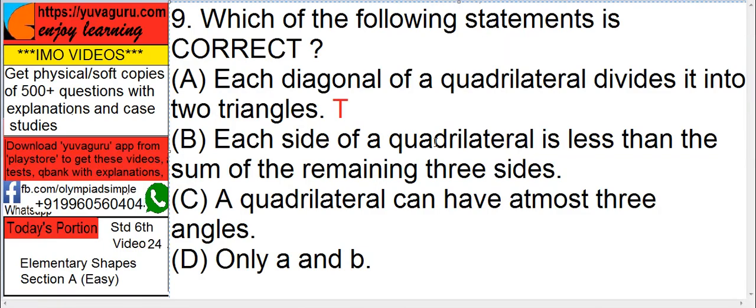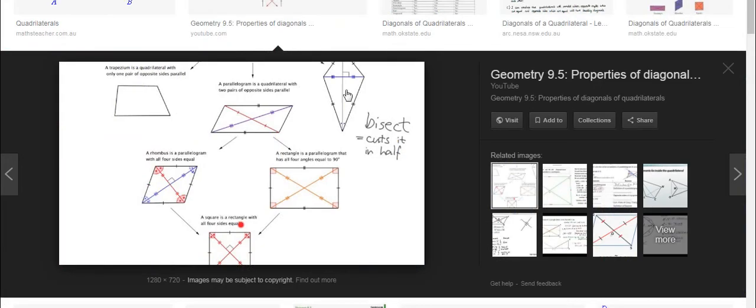Each side of a quadrilateral is less than the sum of the remaining three sides. Again, check these quadrilaterals. Take any one side and add the remaining three sides.